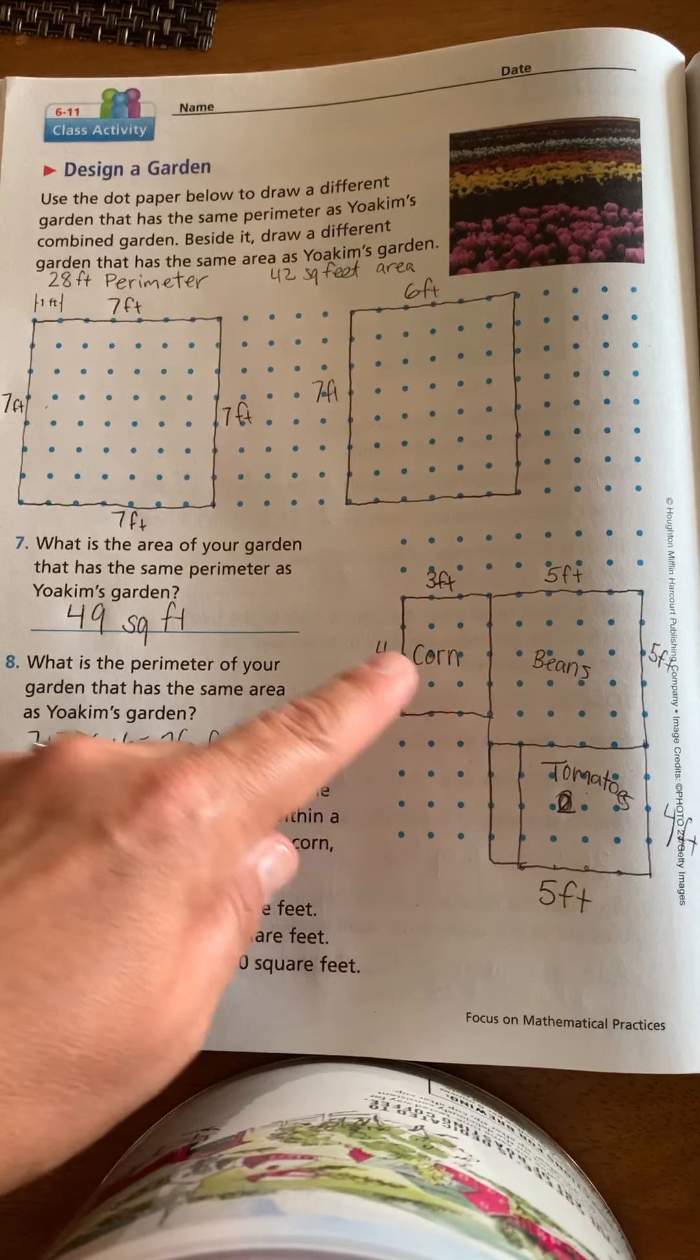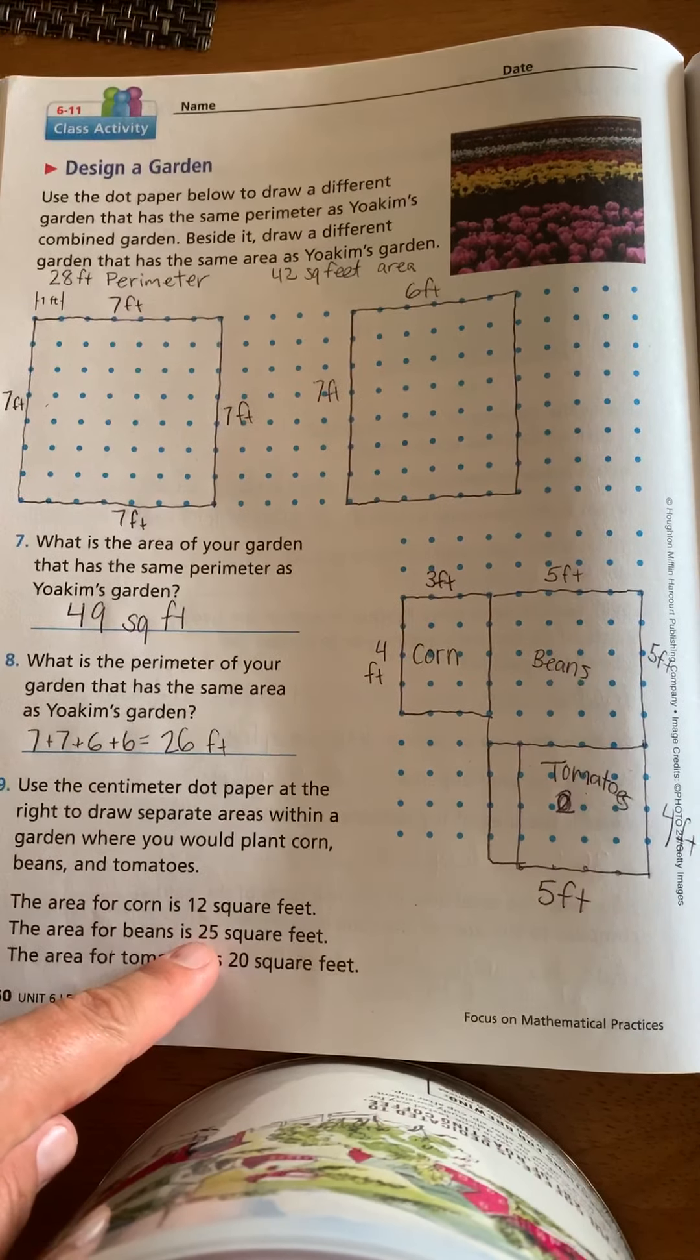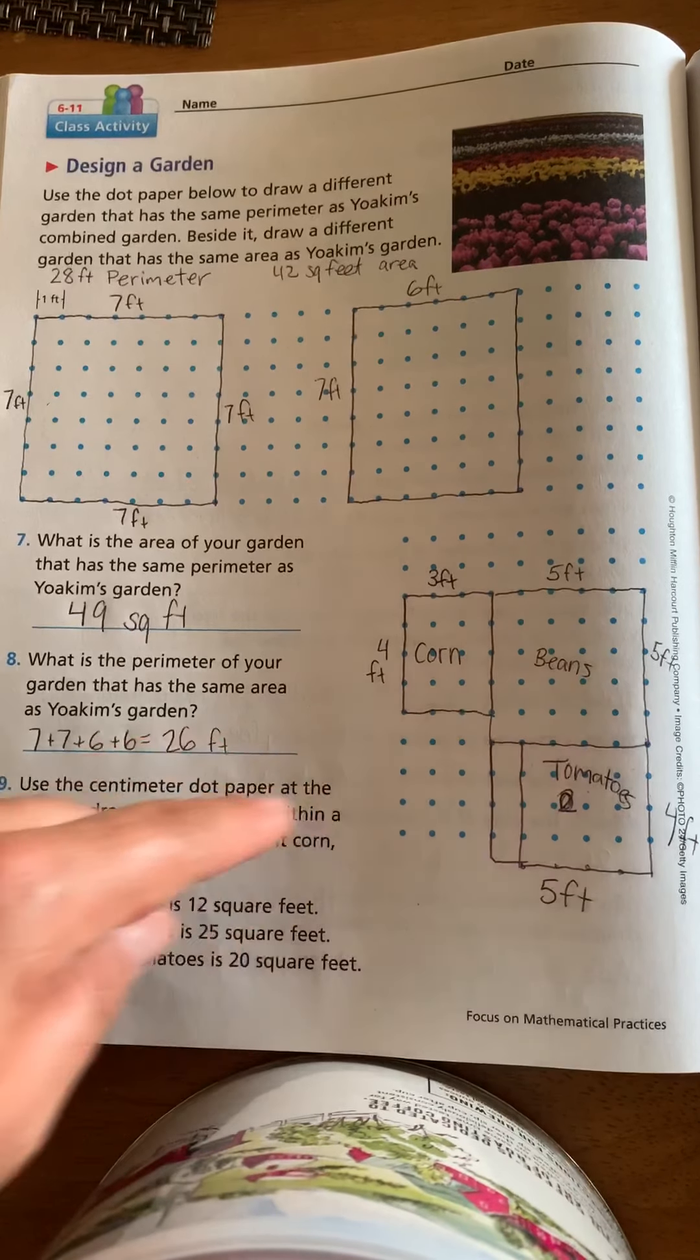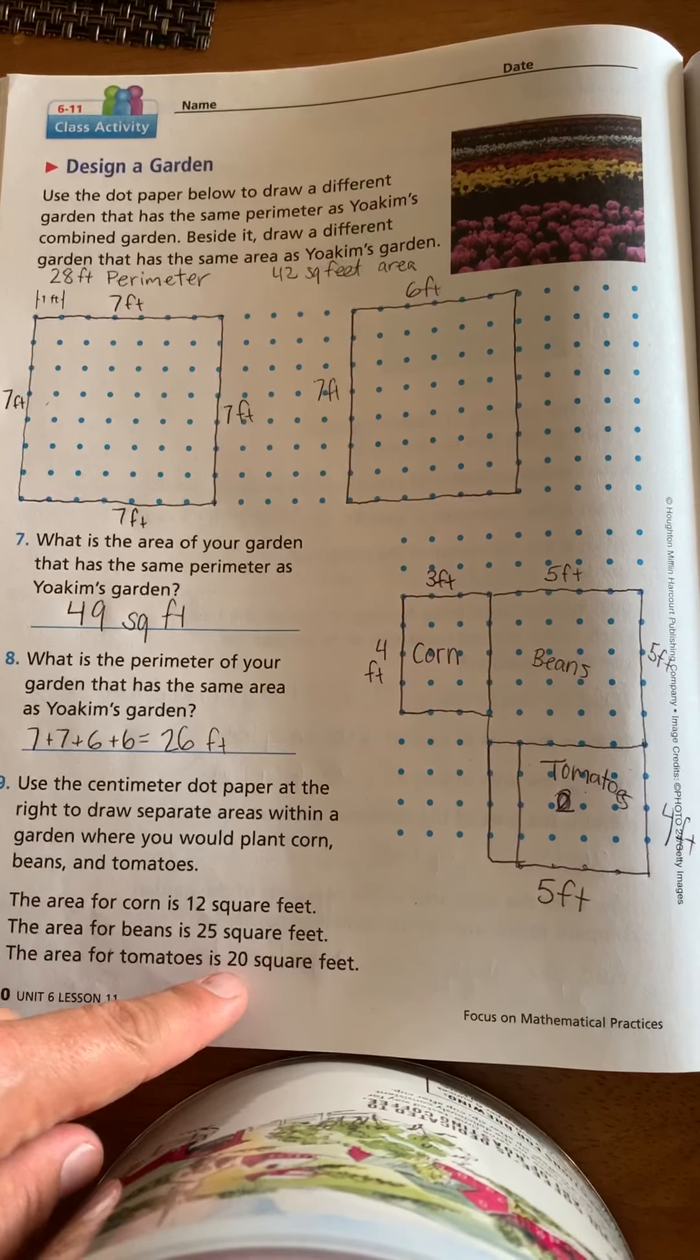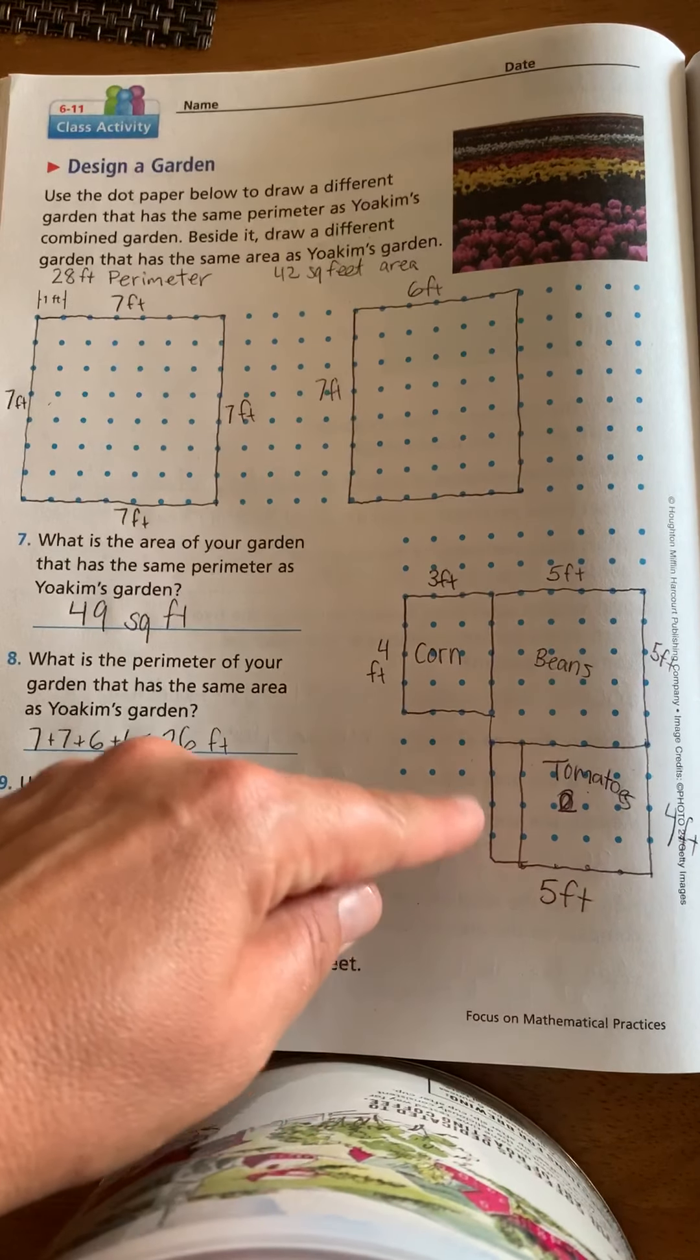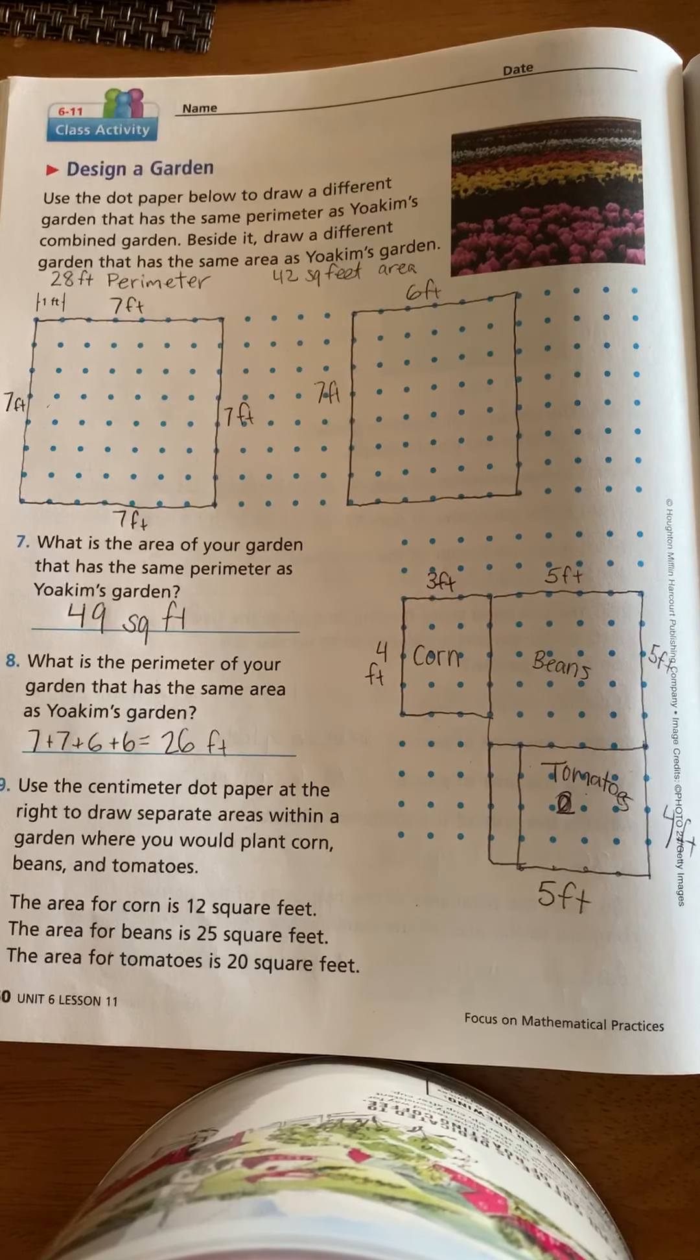And then area for the beans is 25. So I did 5 by 5. And then the area for the tomatoes is 20 square feet. So I did 4 by 5 and I accidentally cut it short and did 4 by 4, but then I added that one there. So sorry about that.